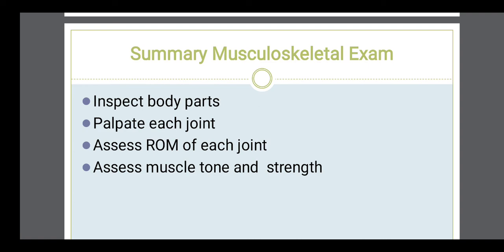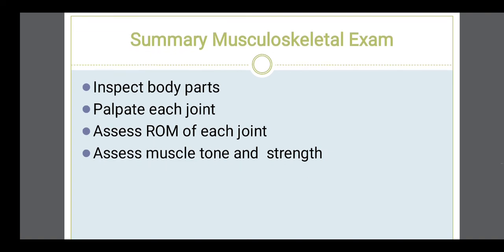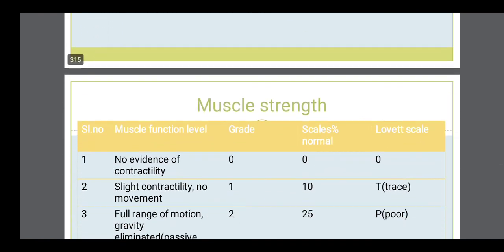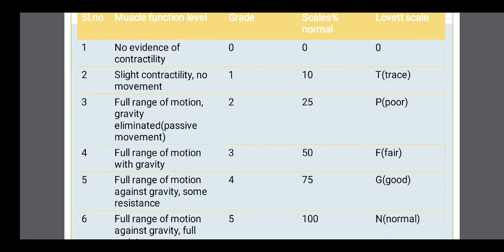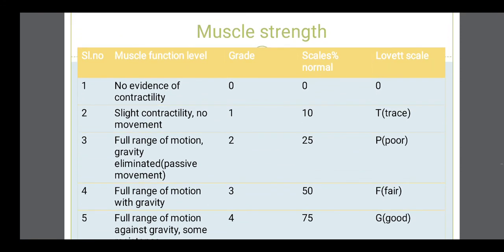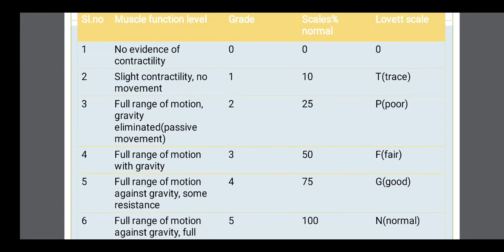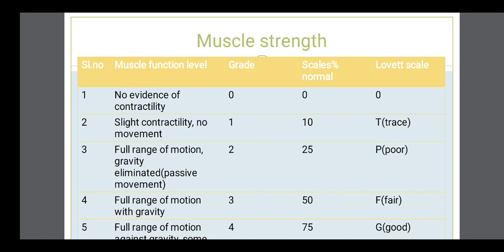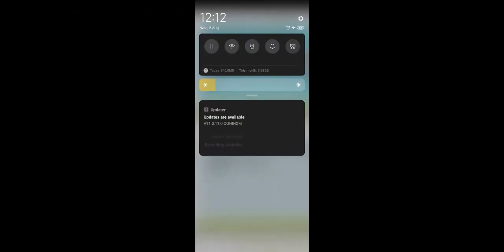To summarize, the musculoskeletal system is first inspected, then palpated for each joint, then range of motion examination is performed, and muscle tone and strength are also assessed by doing a resistance test. If you find resistance, that means the patient has muscle strength. This is all about the examination up to the musculoskeletal system. I will continue in the next class. Thank you, students.